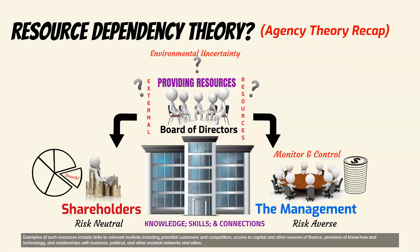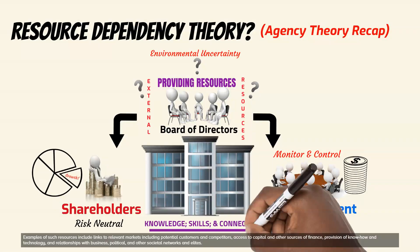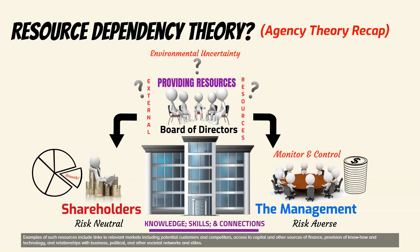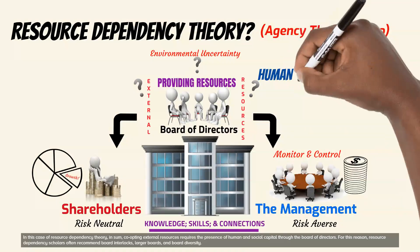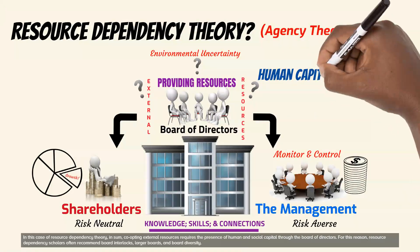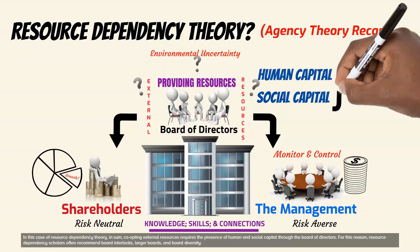Examples of such resources include links to relevant markets including potential customers and competitors, access to capital and other sources of finance, provision of know-how and technology, and relationships with business, political, and other societal networks and elites. In sum, co-opting external resources requires the presence of human and social capital through the board of directors.